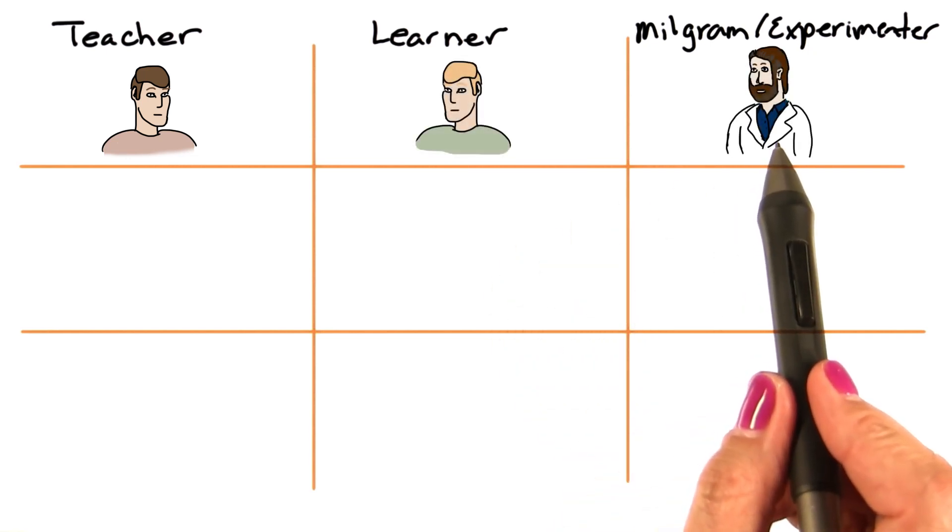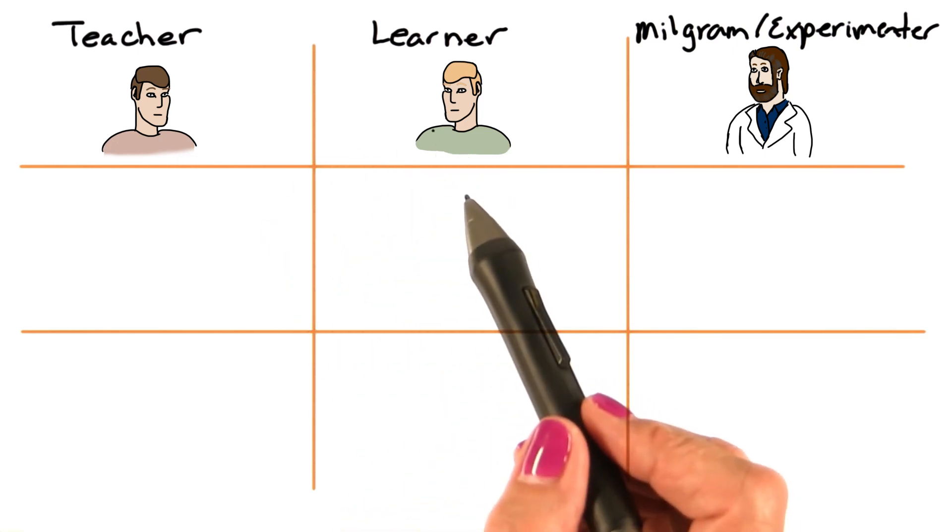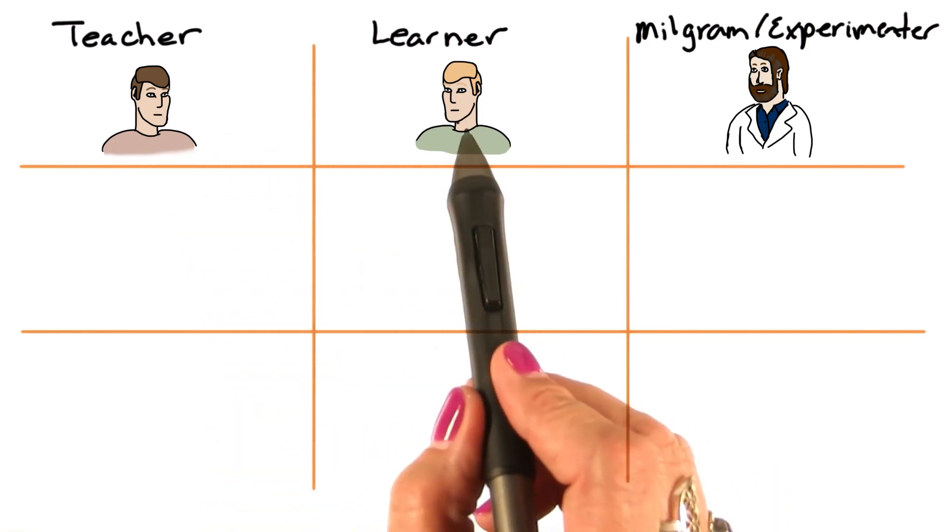One was Milgram, who was the experimenter, and then there was another person. And Milgram had these two people draw slips to determine whether they were going to be a teacher or they were going to be a learner.